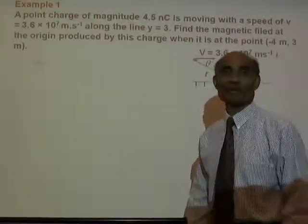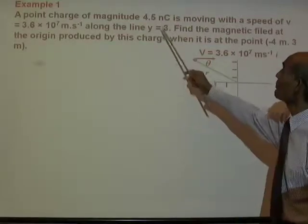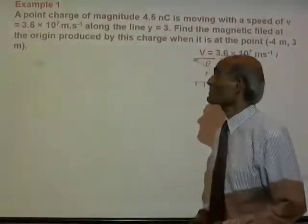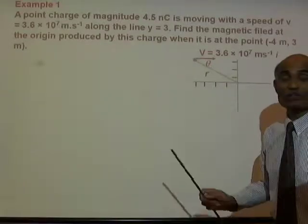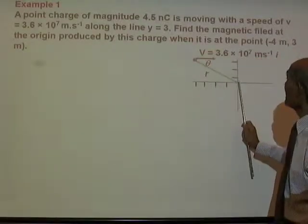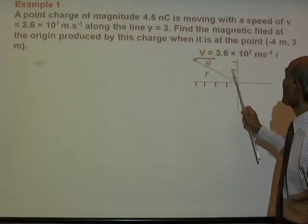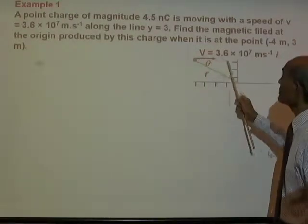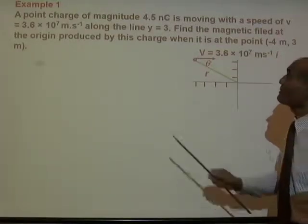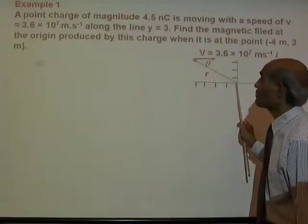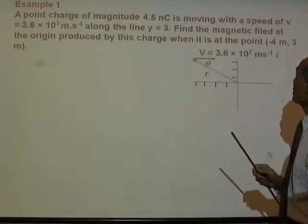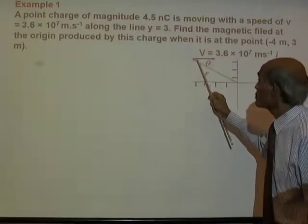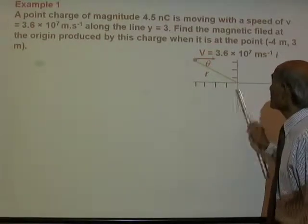A point charge of magnitude 4.5 nanocoulombs is moving with a speed v equal to 3.6 times 10 to the 7 meters per second along the line y equals 3. Find the magnetic field at the origin when the charge is at the point negative 4, 3.